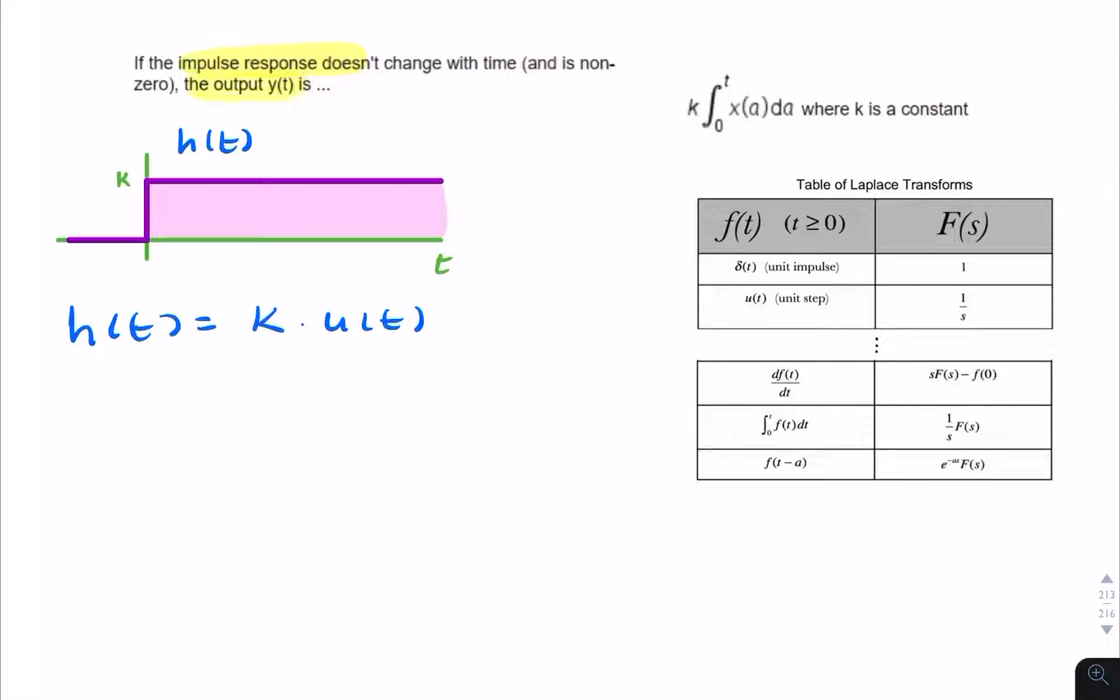The question is asking for the output. What's the output Y? So remember, if we have a system with an input X and an output Y, then Y of T is equal to H of T convolved with X of T.